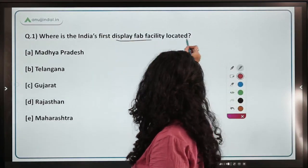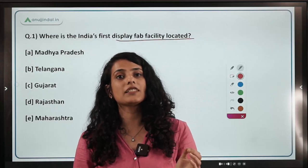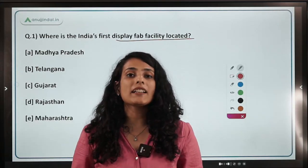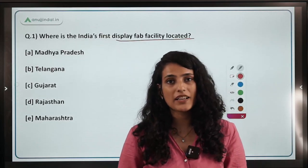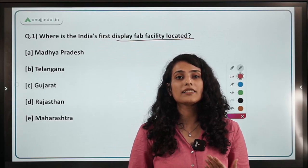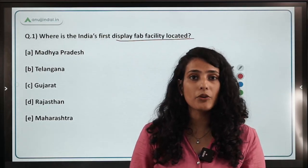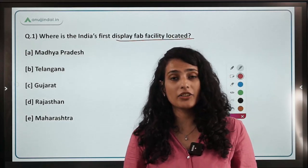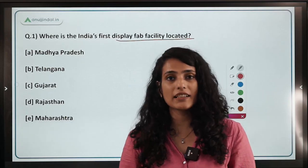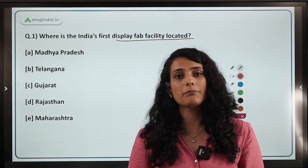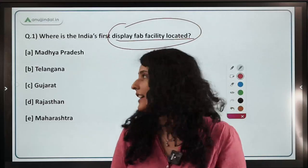Where is India's first display FAB facility located? FAB is a fabrication unit — any semiconductor manufacturing unit is known as a fabrication unit. You all are aware about the National Semiconductor Manufacturing Mission that India has introduced to start indigenous manufacturing of semiconductors in our country in order to minimize imports — import substitution, Atma Nirbhar Bharat. India aims to manufacture semiconductors indigenously and save on the import bill. This biggest manufacturing unit is opening up in the state of Telangana.